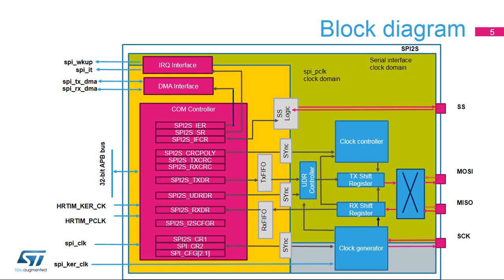The simplified SPI block diagram shows the peripheral's basic control mechanisms and functions. The separated clock domains are highlighted by areas with different colors. All the interconnection signals between the domains are synchronized. The PCLK clock domain has to be clocked when any access of the SPI registers is needed via the peripheral bus interface. The SPI master needs at least an active kernel clock as it has to output the clock signal for the slave. The SPI slave can transfer data without any internal clock signal, as the serial interface domain is fully clocked externally via the SCK pin.